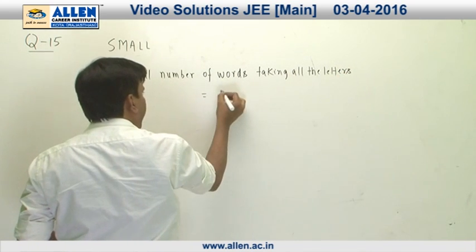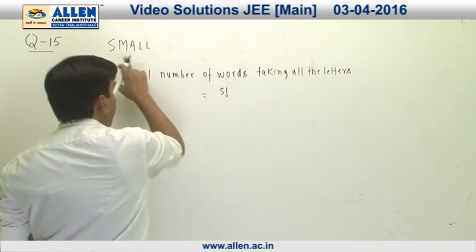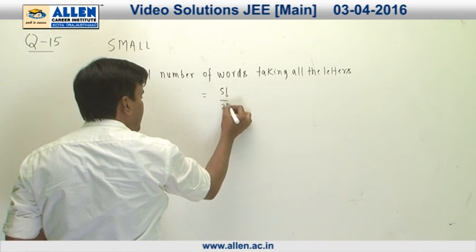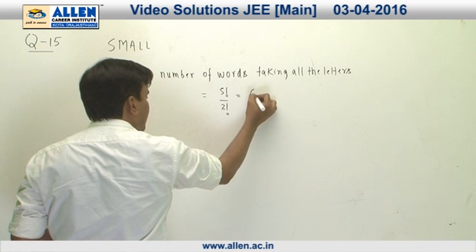This is equal to 5! since there are total 5 objects, and now we can see these two are identical. So for repetition this is 2!. So total number is 60.